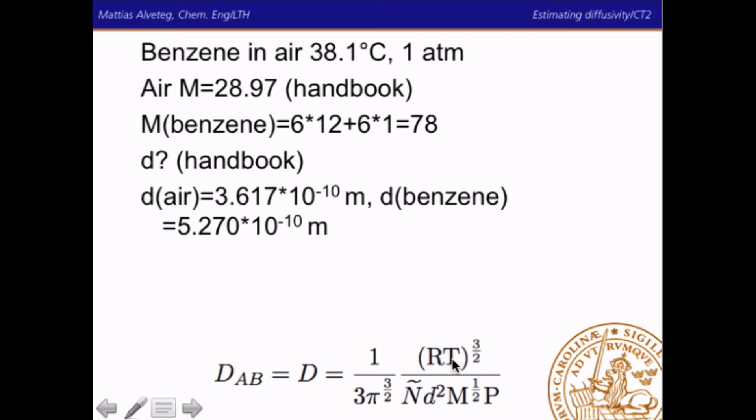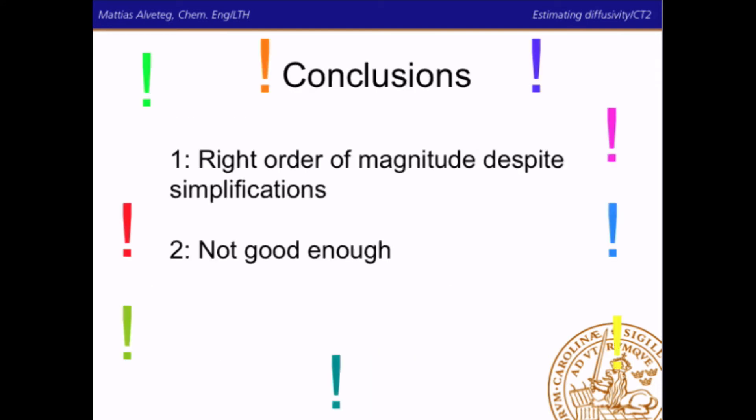And we put that all into this equation down here, where we have the gas constant, the temperature in Kelvin, Avogadro's constant, the diameter in SI units, the molar mass in SI units, so kilogram per mole, and then the pressure, Pascal. And we get 3.18 times 10 to the power minus 6 square meter per second. And we can compare that with the literature value of 9.62. So this is clearly not good enough. It's the right order of magnitude, but not good enough in use.